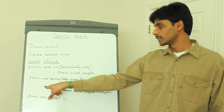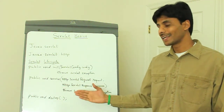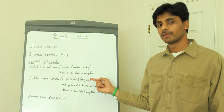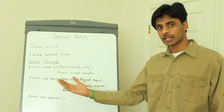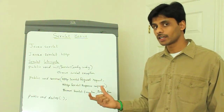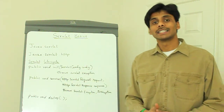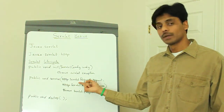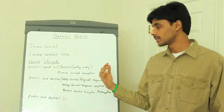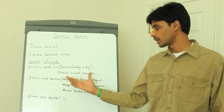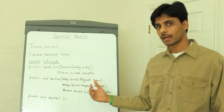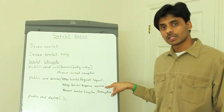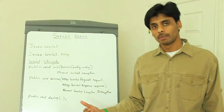Then it invokes the service method, providing it with an HttpServletRequest which has all the information from the incoming request. The servlet container reads the HTTP request, builds this object for you, and hands it over to your service method, where you can work with the incoming parameters.